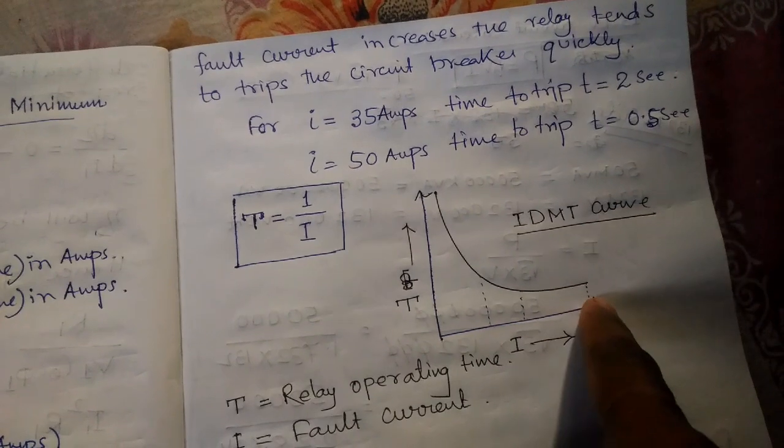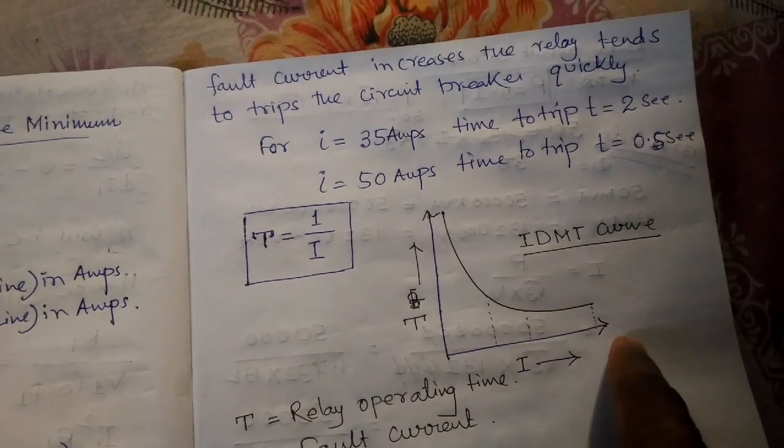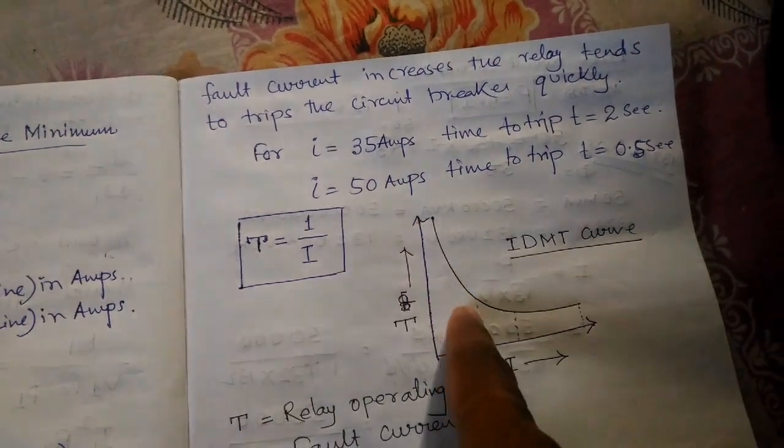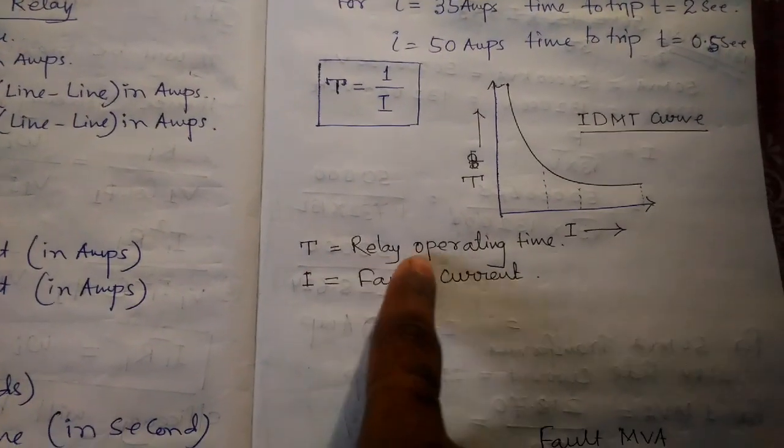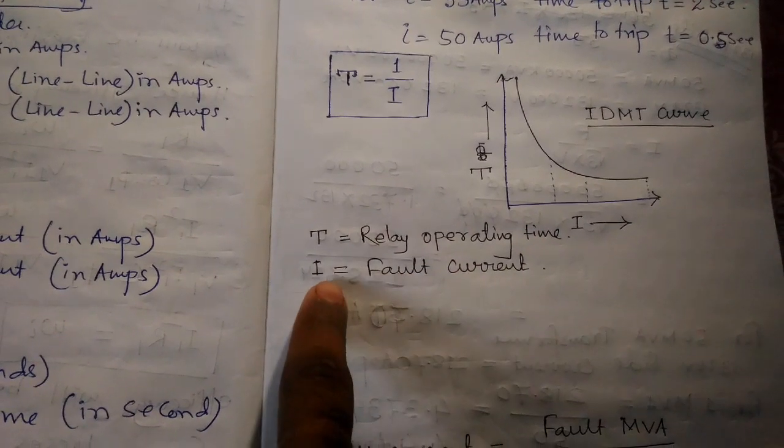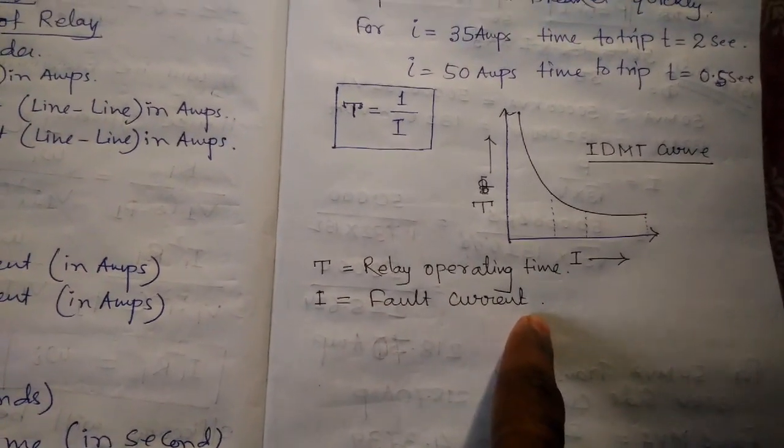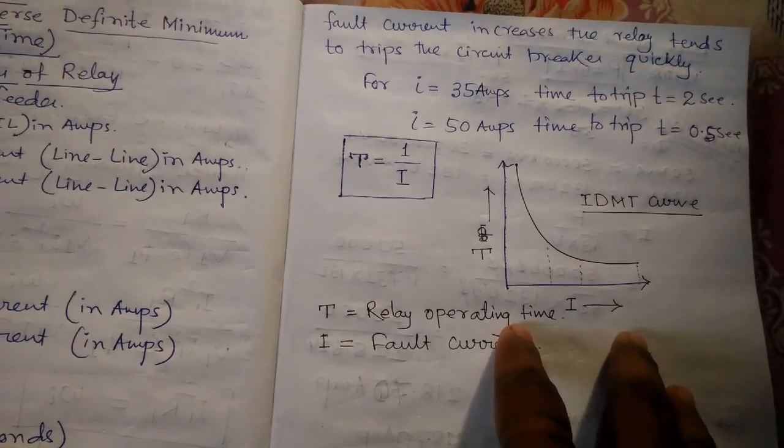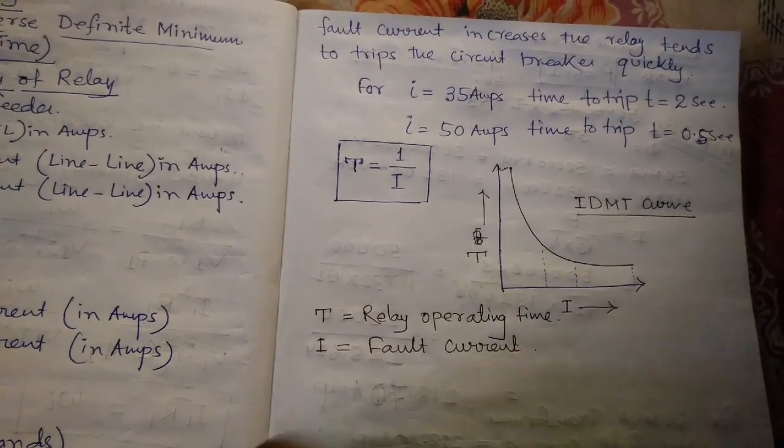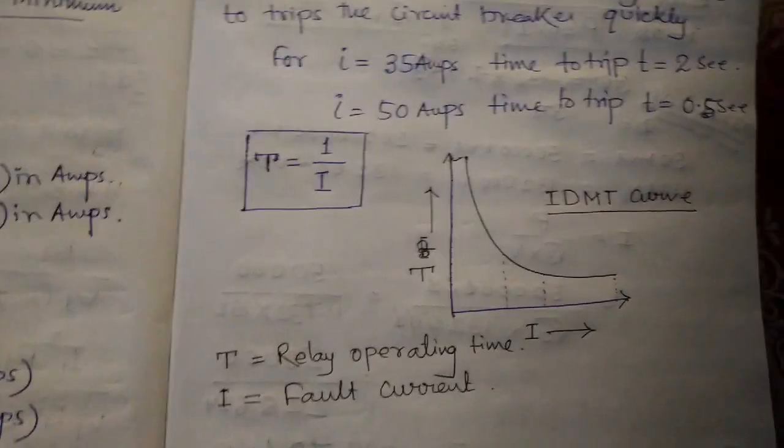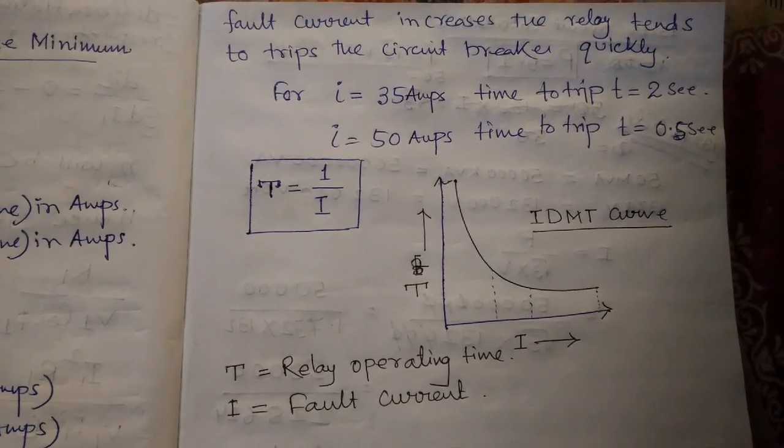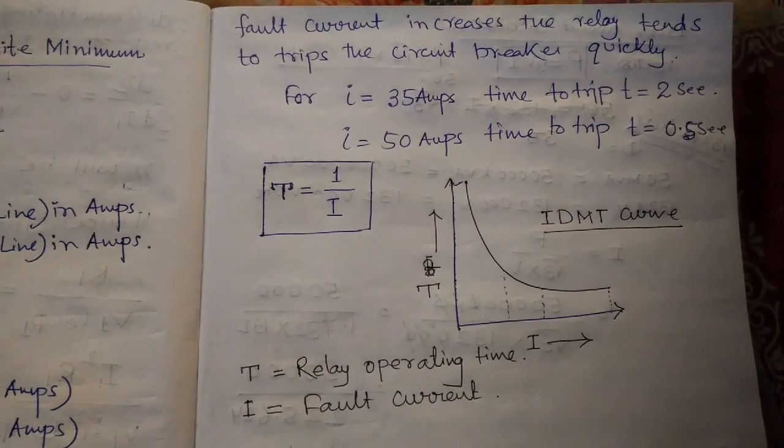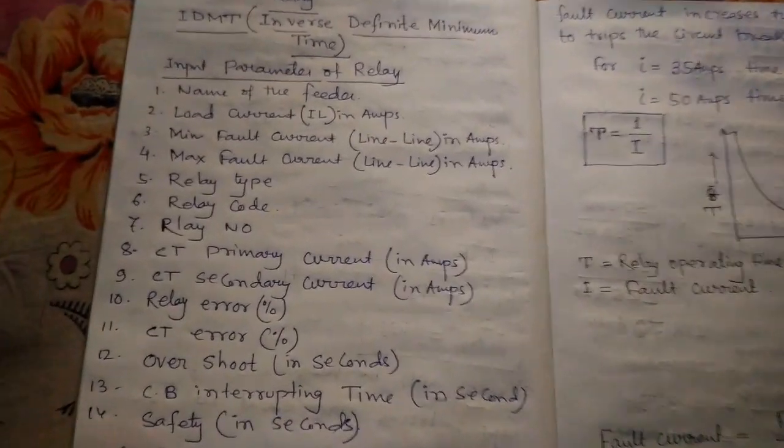This is the IDMT curve. If the current is increasing, then the time is decreasing. Where T is the relay operating time and I is the fault current. It is a very important relay and is used to clear faults accordingly in transmission systems or transmission networks.